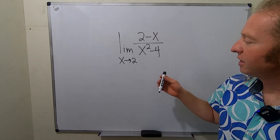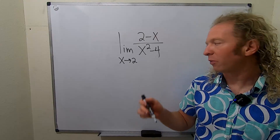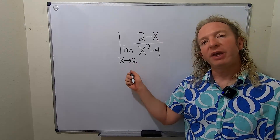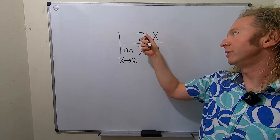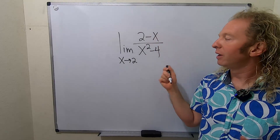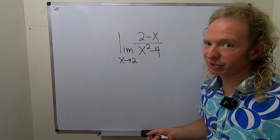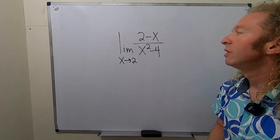Whenever you're taking a limit, you should always at least mentally take this number and plug it in. So if you do that, you get 2 minus 2, which is 0. And on the bottom, you're going to get 4 minus 4, which is also 0. So you're going to get 0 over 0.